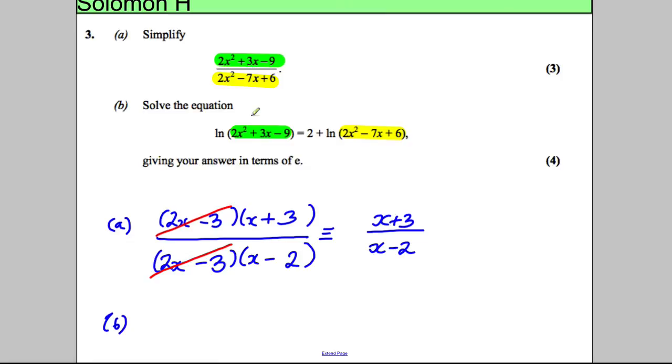So let's see if we can do that. This is the equation we're given to solve: the natural logarithm - I might say from now on ln(2x² + 3x - 9) is going to be equal to 2 + ln(2x² - 7x + 6).